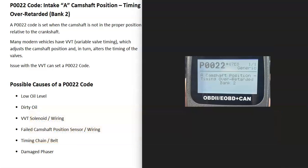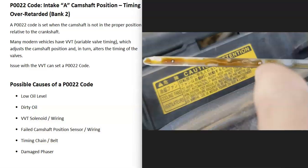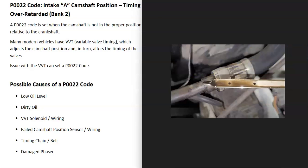The first possible cause of a P0022 code is low engine oil. If the engine oil is low, it could cause problems, so be sure to check your engine oil. Also make sure the engine oil is not super dirty, because dirty engine oil can cause issues with variable valve timing. Check that it's at the correct level and not really dirty.